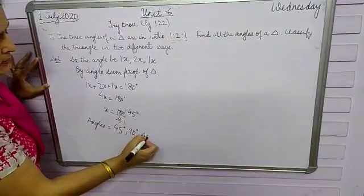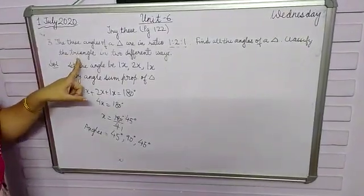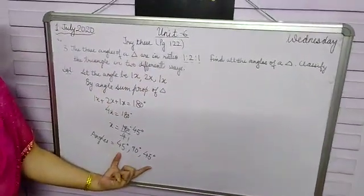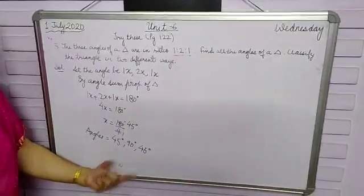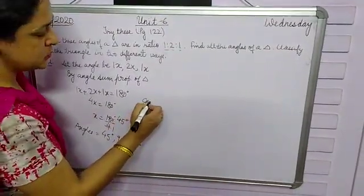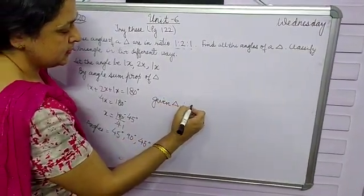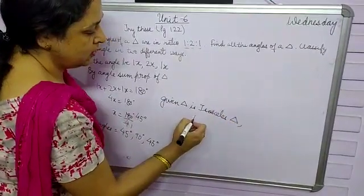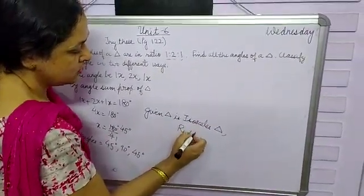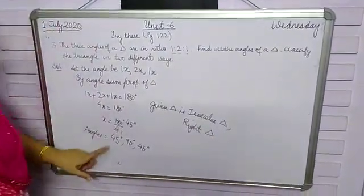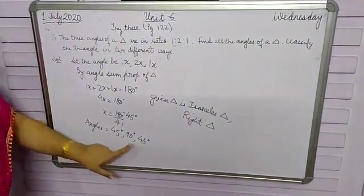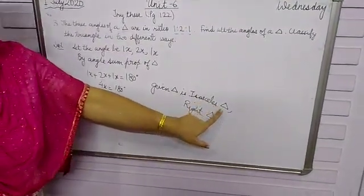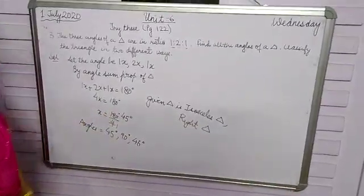Now we have to classify the triangle in two different ways. Since two angles are equal, it means it is an isosceles triangle. And since one angle is 90 degrees, that means it is a right angle triangle also. So this triangle can be classified in two ways: isosceles, because if two angles are equal it means two sides are also equal, and right triangle. So the given triangle is both an isosceles triangle and a right triangle.